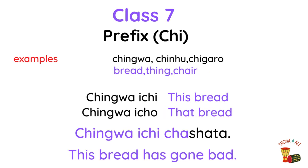Class 7, prefix chi. Example nouns: chingwa, chinhu, chidaro. Example phrase: Chingwa ichi chashata — this bread has gone bad. Chingwa ichi — this bread. Chingwa icho — that bread.